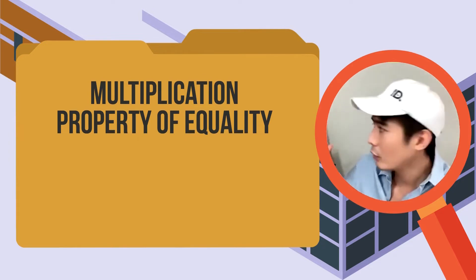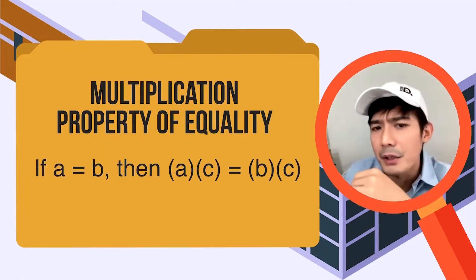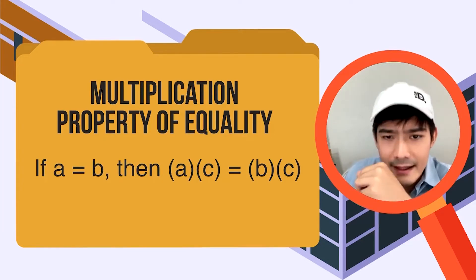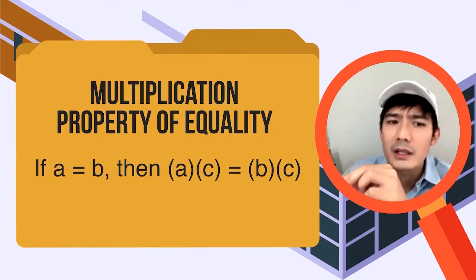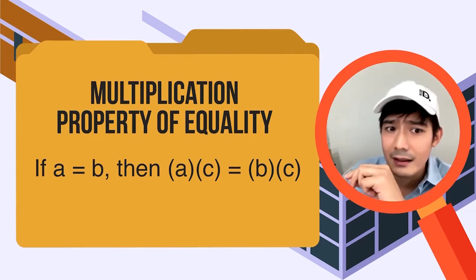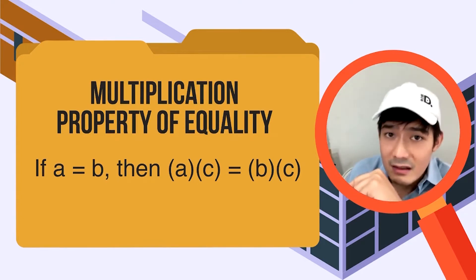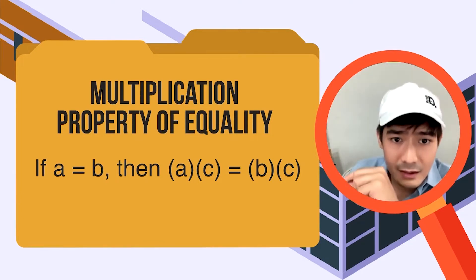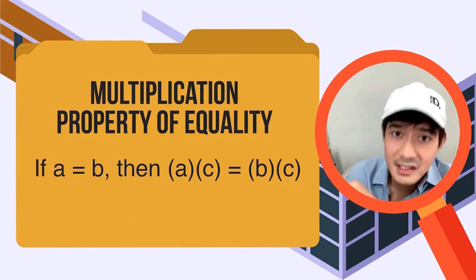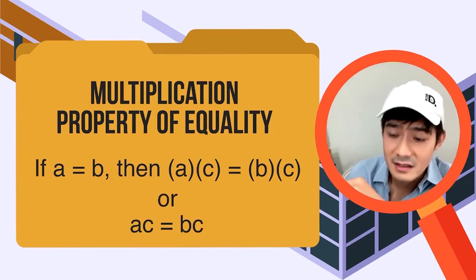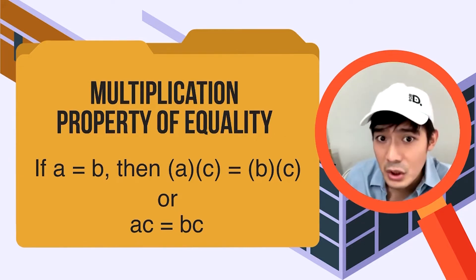May statement tayo. Tignan nga natin. For real numbers A, B, and C: if A is equal to B, then A times C is equal to B times C. Or simply, AC is equal to BC.